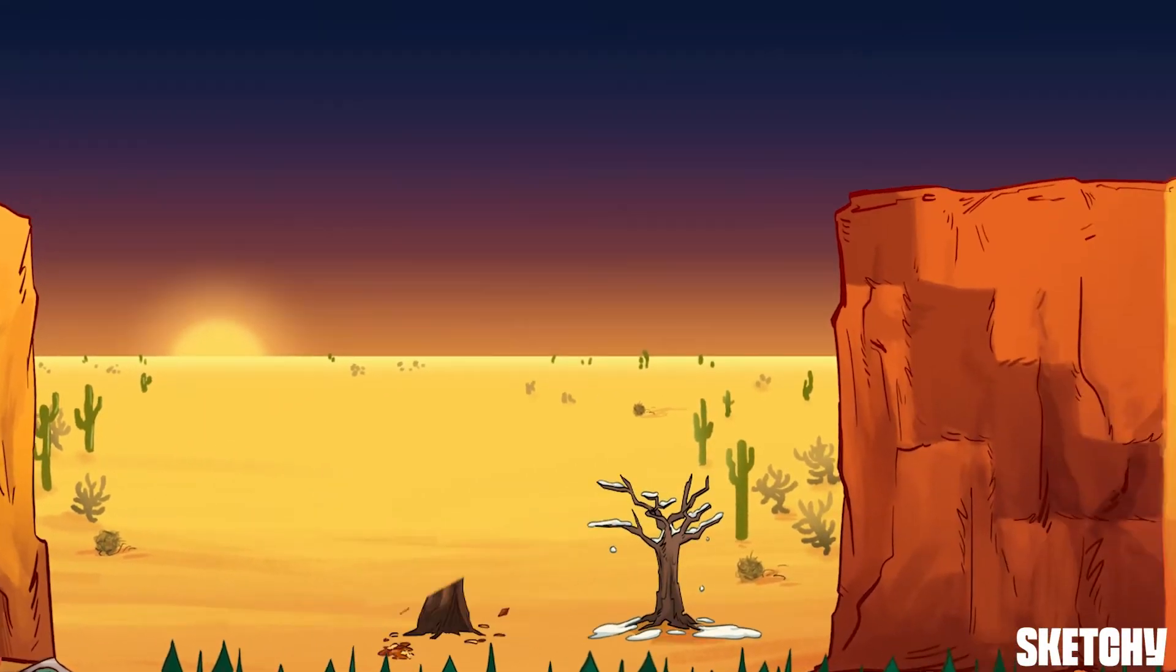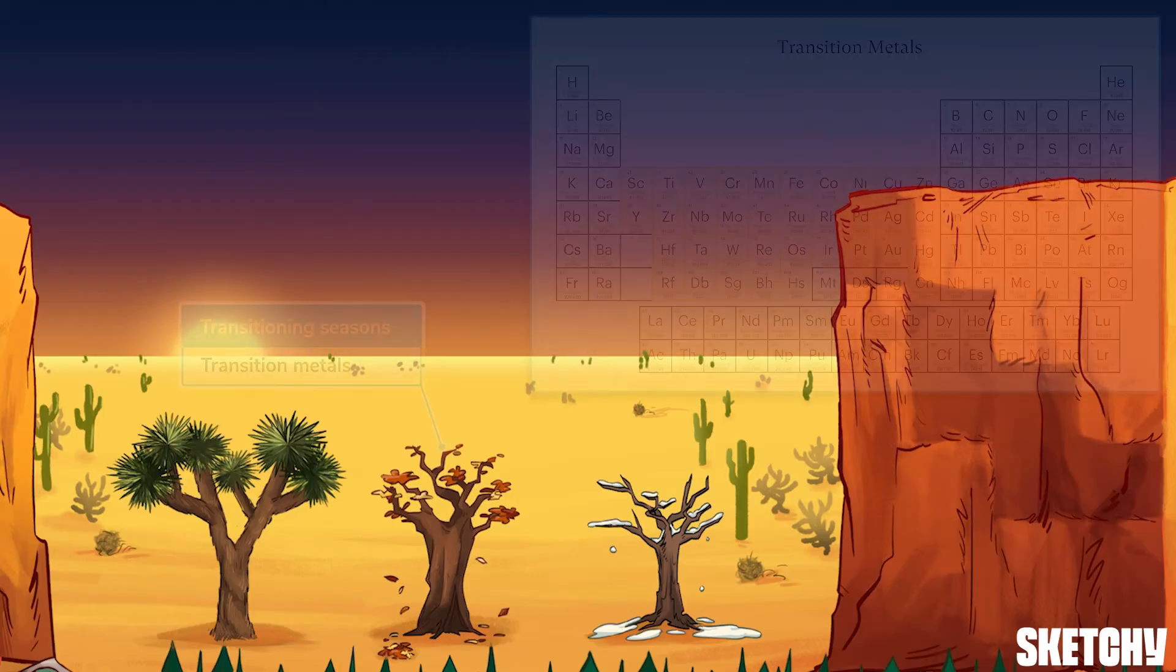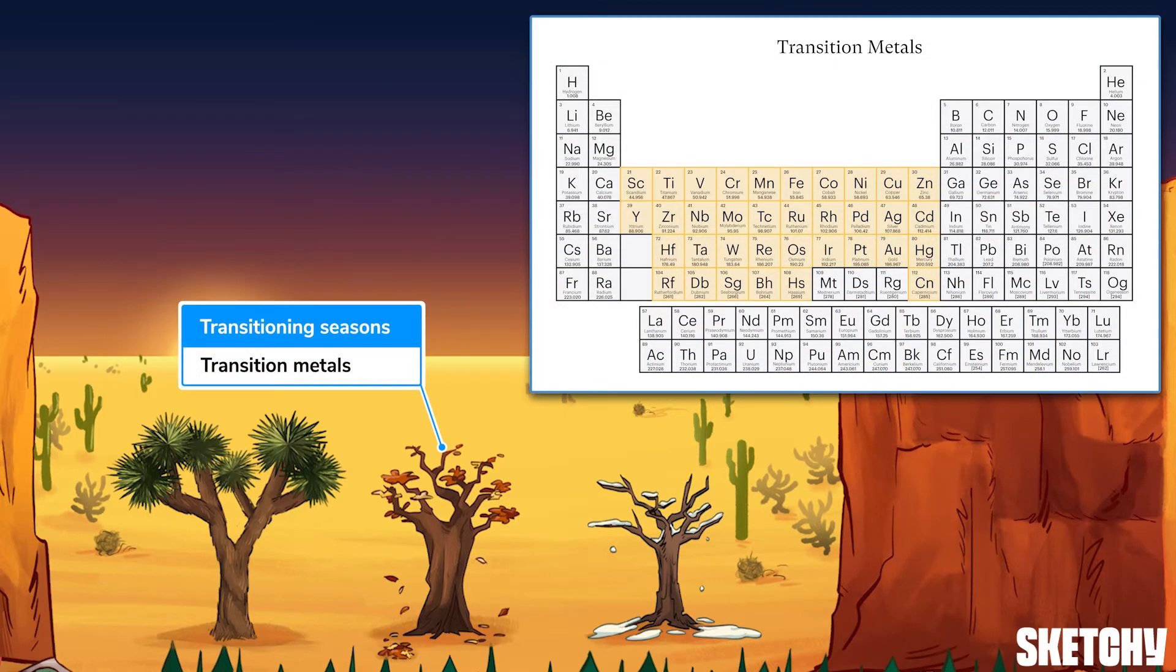Now we'll shift our attention to the open desert for groups 3 through 12. These trees transitioning from summer to winter are a reminder that the groups in this region of the periodic table are called transition metals. These elements are usually shiny and they conduct electricity well. Chances are when you think of metal, you're thinking of a transition metal. These include elements like gold, silver, iron, and platinum.